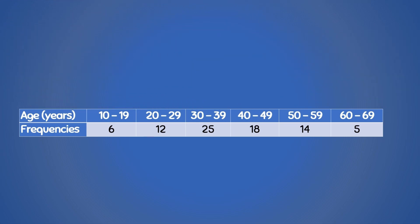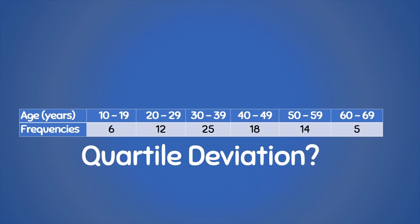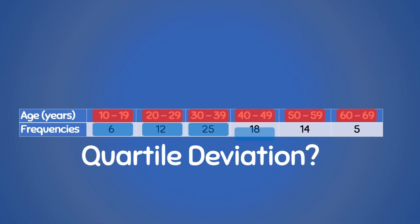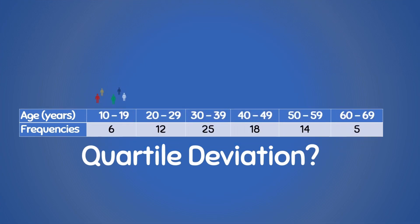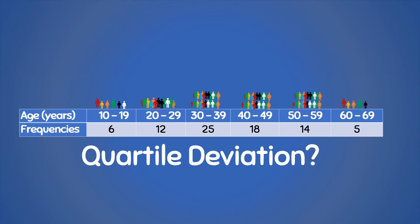So what is the quartile deviation for this data? Here we see the age of patients in groups, and each age group has its corresponding frequency. For example, the first group of patients are those in the 10 to 19 age group, and there are 6 patients. The second group with ages between 20 to 29 has 12 patients. So this data is a grouped distribution, and we can see that there are 6 groups or 6 classes.